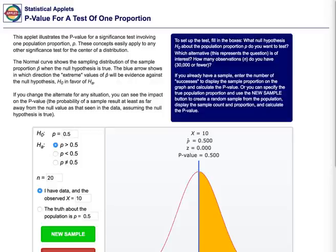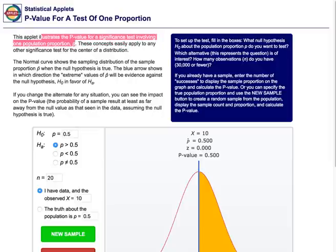Our goal with using this applet is to help you understand and visualize what a p-value really means. Let's start by taking a look at the instructions listed above the visualization tool. We notice that this applet illustrates the p-value for significance tests involving one population proportion p. This is perfect since the unit we are currently studying is hypothesis testing for one population proportion.